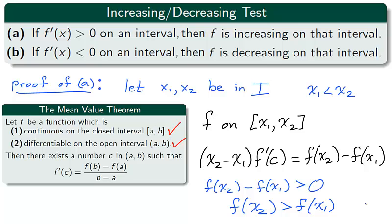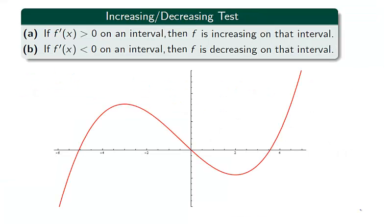Following a nearly identical argument will lead you to the proof of part b. Using the increasing-decreasing test, we can tell if an interval is increasing or decreasing. But how do we divide the real numbers into intervals on which f is increasing or decreasing? We'll divide the real numbers into subintervals using critical numbers — those numbers for which the derivative is 0 or does not exist.